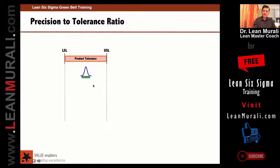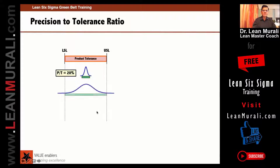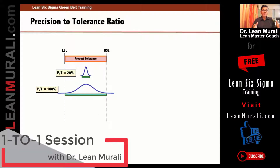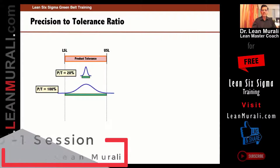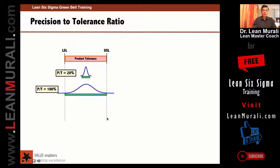This is the measurement variation. If the measurement variation precision-to-tolerance ratio is 20 percent, this is just graphically representing. If it is occupying the full tolerance, then it's an issue because 100 percent it is occupying the tolerance. The precision-to-tolerance ratio is 100 percent if it occupies the full specification limits.